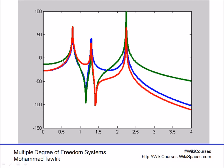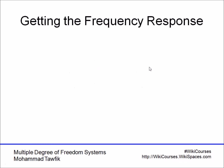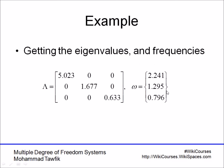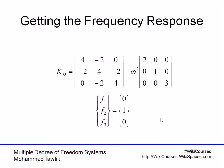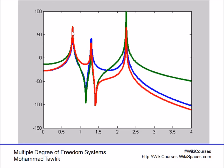All three curves reach high values at certain frequencies. The second peak is around 1.2 and the third is about 2.1 radians per second. Comparing these to the natural frequencies we computed, you'll find exactly the same values. You get maximum response — called resonance — when the system is excited at a frequency equal to any of its natural frequencies, forcing all three masses to vibrate at very high amplitudes.